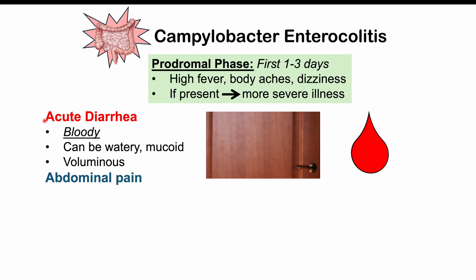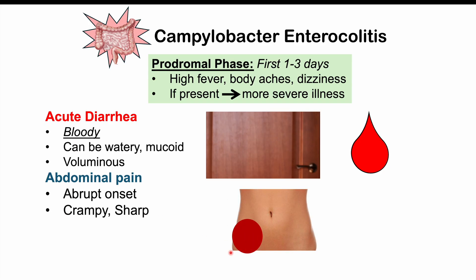Abdominal pain often occurs alongside the acute diarrhea. It is typically an abrupt onset of crampy, sharp abdominal pain, most often seen in the right lower quadrant. Breaking the abdomen into four quadrants using the belly button as the midpoint, the right lower quadrant is most often affected. It can also occur in the left lower quadrant. The right lower quadrant is most affected because this is where the ileum and part of the jejunum are located, and it can appear to be appendicitis in some cases.